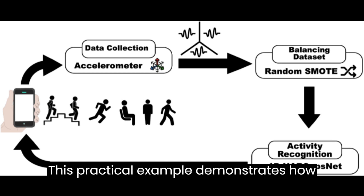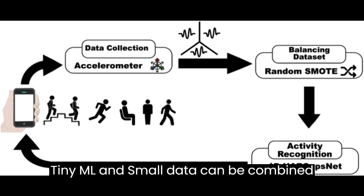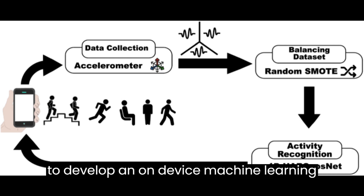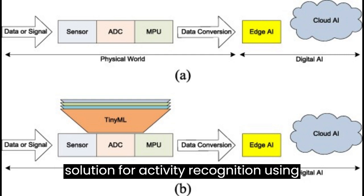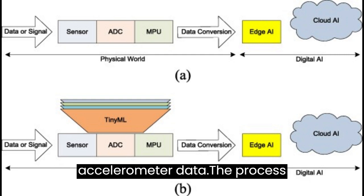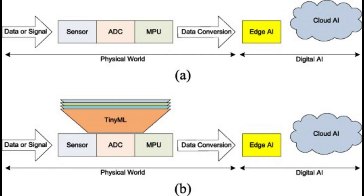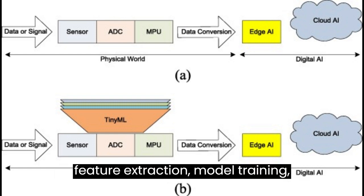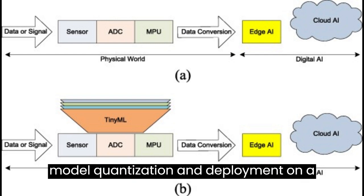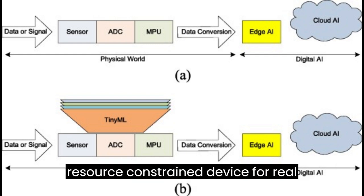This practical example demonstrates how TinyML and small data can be combined to develop an on-device machine learning solution for activity recognition using accelerometer data. The process involves data collection, pre-processing, feature extraction, model training, model quantization, and deployment on a resource-constrained device for real-time inference.